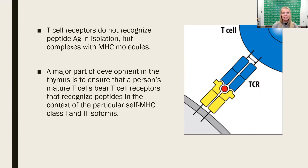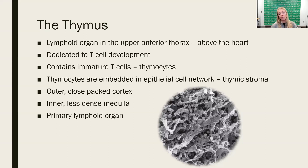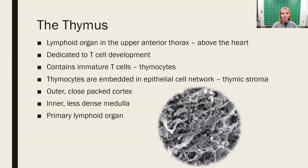Before we get too deep into T cell development, let's speak in depth about the thymus as a tissue. It is a primary lymphoid organ — we have two primary lymphoid organs: the bone marrow and the thymus. The thymus is located above the heart in the upper anterior thorax, just below the throat. Its major function is to educate T cells. It contains a variety of cells, but mostly immature T cells called thymocytes, which are embedded in a network of epithelial cells called the thymic stroma.